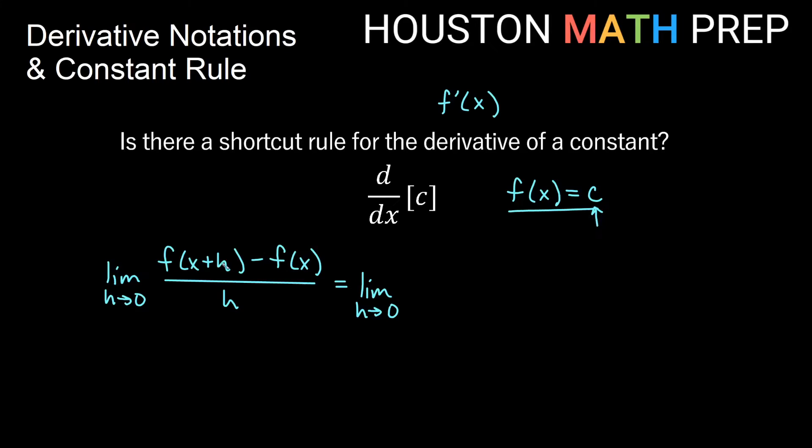So we get c for this and then minus the original function which is also c over h, right? And the limit as h goes to 0. Except if we just have c minus c on top no matter what, we can say limit as h approaches 0.